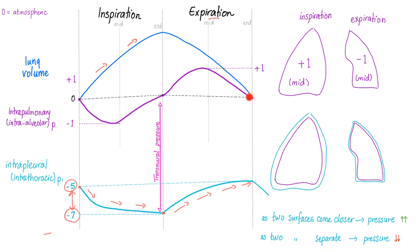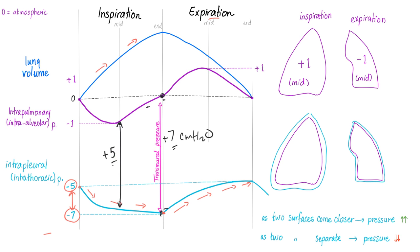The intrapulmonary pressure and intrapleural pressure — the difference between them is called transmural pressure, and this is the pressure that actually inflates the lungs. If you measure from 0 to negative 7, the distance is not negative — the distance is always positive, so it's plus 7 centimeters of water. The transmural pressure ranges between 5 to 7. Intrapleural pressure and transmural pressure have the same amount but different charges: when intrapleural is negative 5, transmural is positive 5; when intrapleural is negative 7, transmural is positive 7.